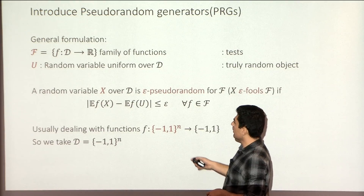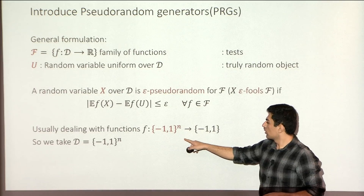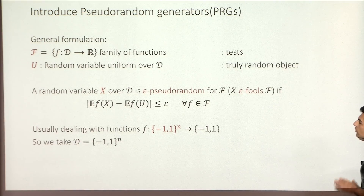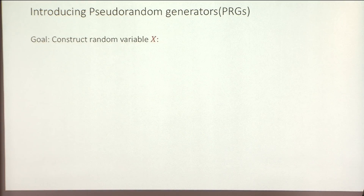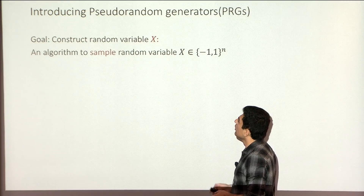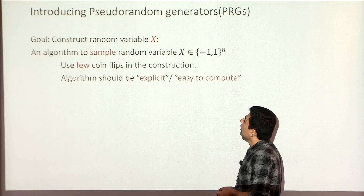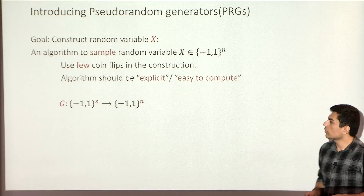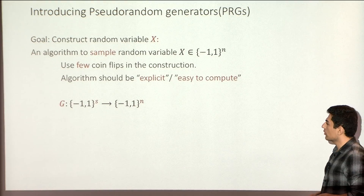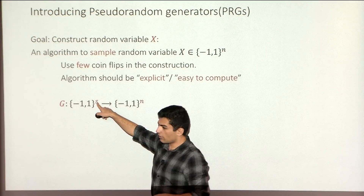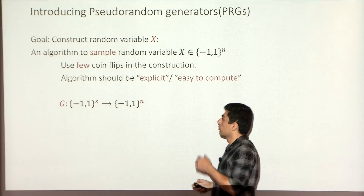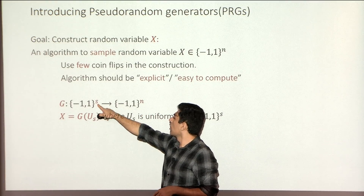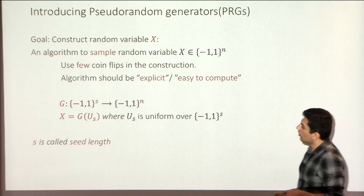The interesting case is when you pick the domain to be the Boolean cube, specifically {-1,1}^n — later you will see why this specific choice. The goal is to construct this random variable, meaning I just need an algorithm to sample it using as few coin flips as possible, and the algorithm should be explicit. You can formulate this as a function g that takes s truly random bits and gives you n bits where n is much larger than s. The random variable x would be g applied to a uniform random variable on s bits, and s is called the seed length.